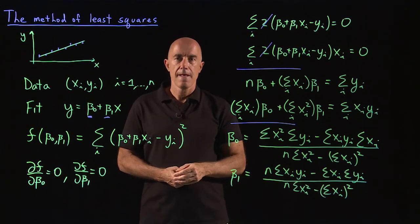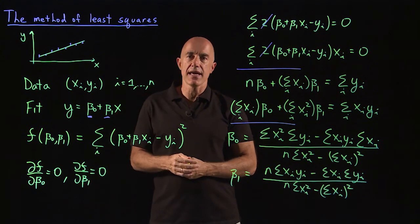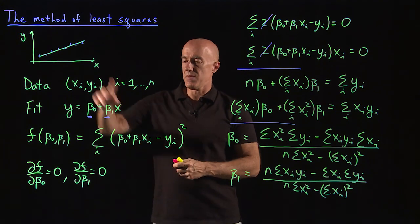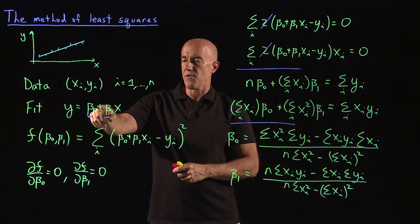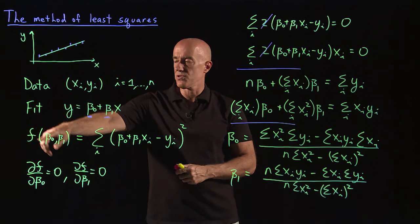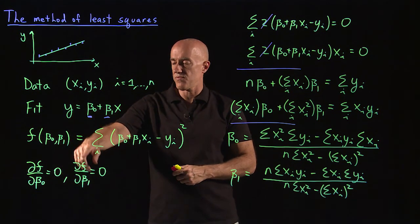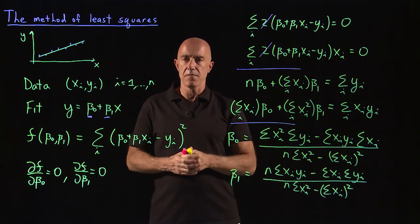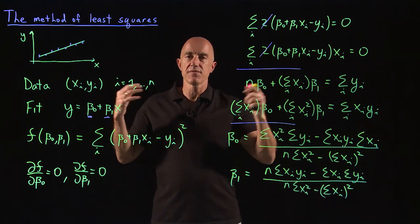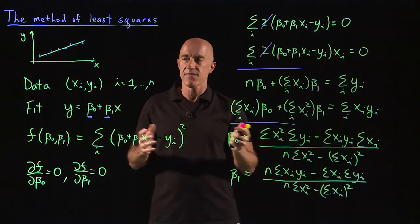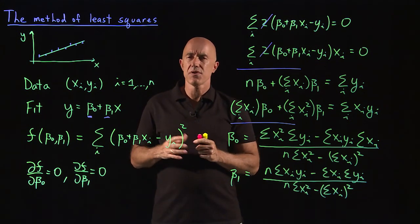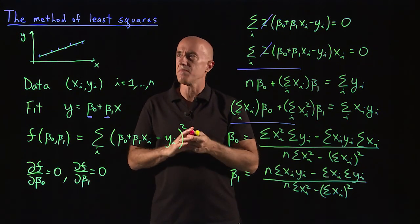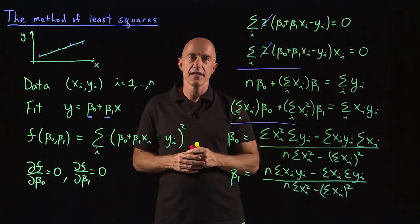So you can verify it gives the same answer. To review: this is an application of partial derivatives to find the minimum of a function. We minimized the sum of squares by determining the parameters beta_0 and beta_1, setting the partial derivatives of F with respect to beta_0 and beta_1 equal to zero, giving a system of two equations and two unknowns solvable by any method. I hope this gives you a taste of using partial derivatives to minimize functions. I'm Jeff Chasnoff — thanks for watching, and I'll see you in the next video.